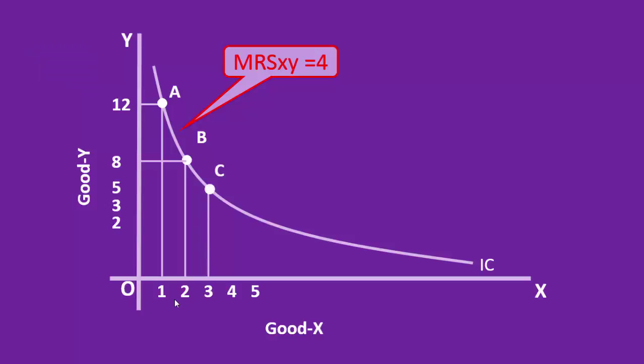The consumer goes for one more unit of good x. Now he has to offer good y to carry out the exchange. Since the stock of good y at his disposal decreases, he is not willing to offer four units of good y. He offers only three units.